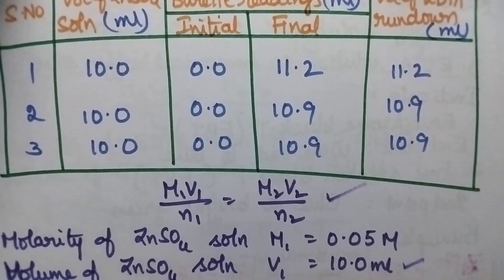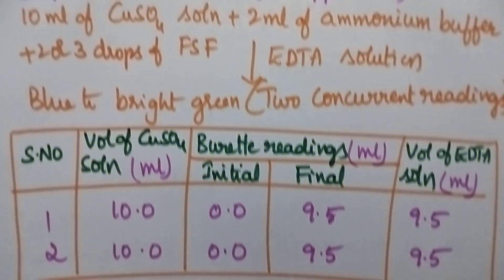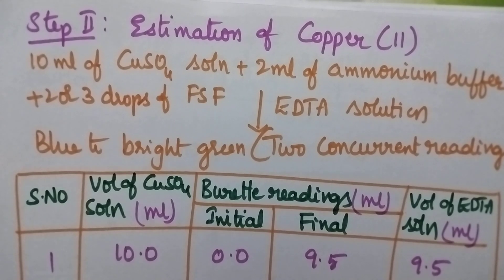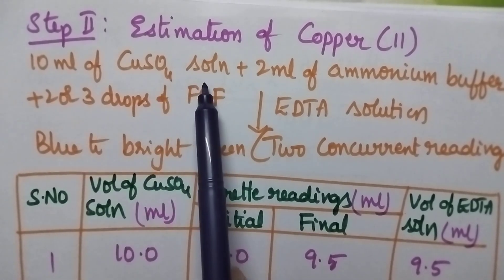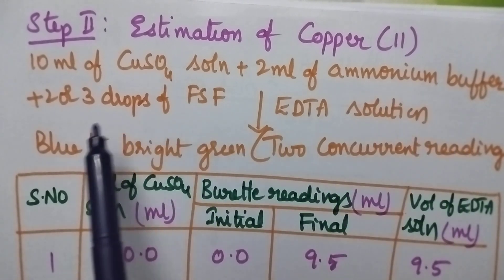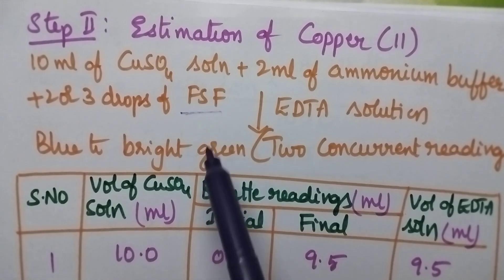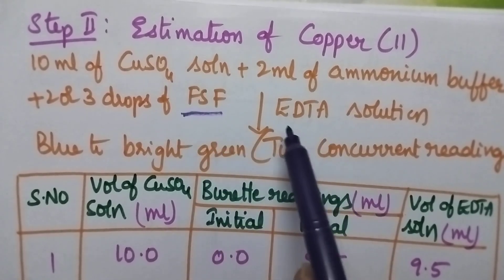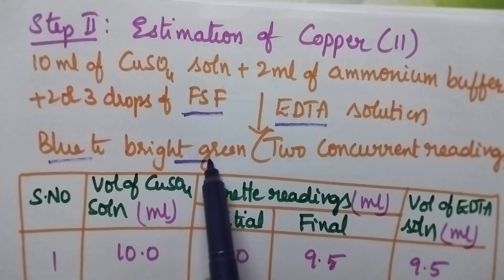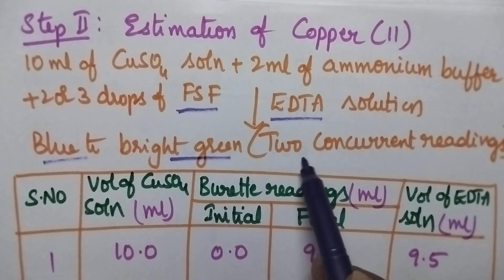In the second step, the copper will be estimated. 10 ml of the copper sulfate solution is transferred into the conical flask; 2 ml of ammoniacal buffer is added and 2 or 3 drops of Fast Sulphone Black F indicator is added. The whole solution is titrated against EDTA solution until the blue color changes to bright green. The same titration is repeated until two concurrent readings are obtained.